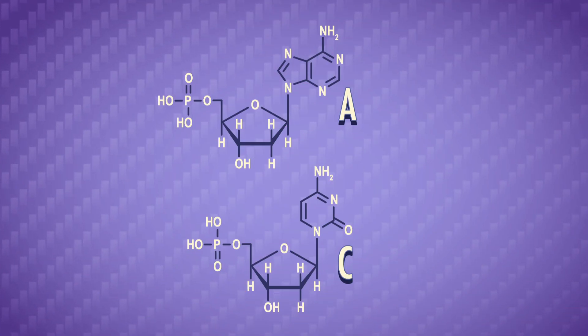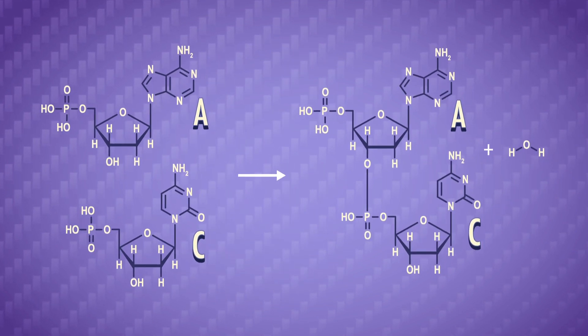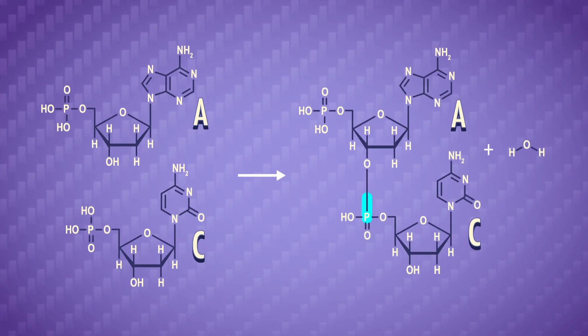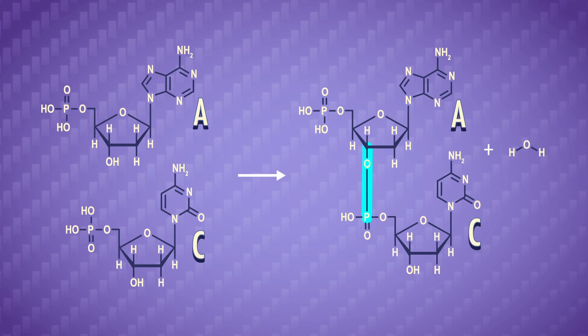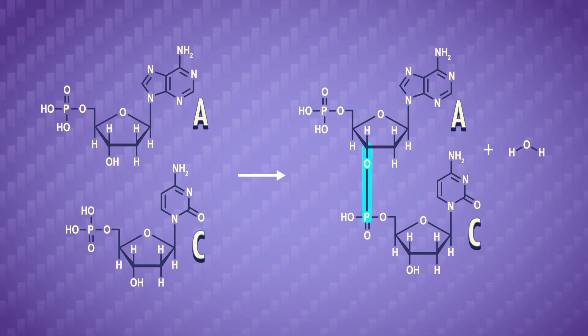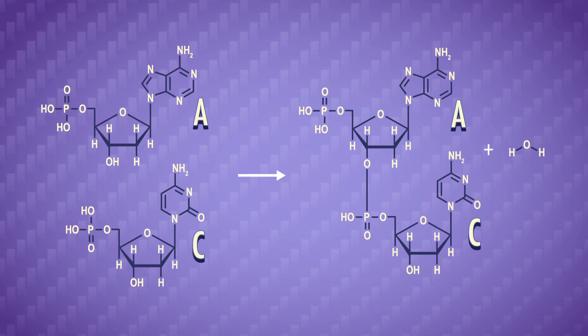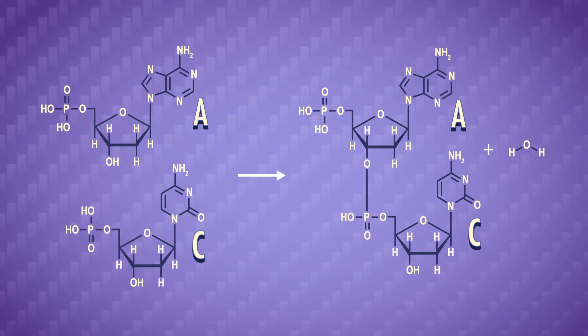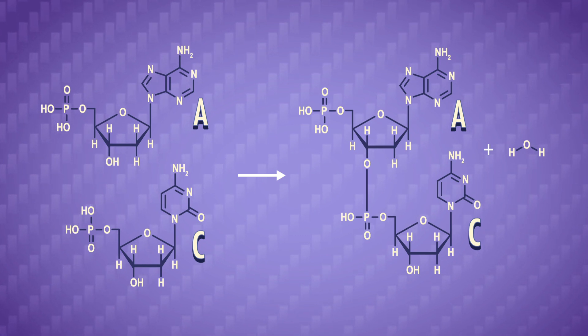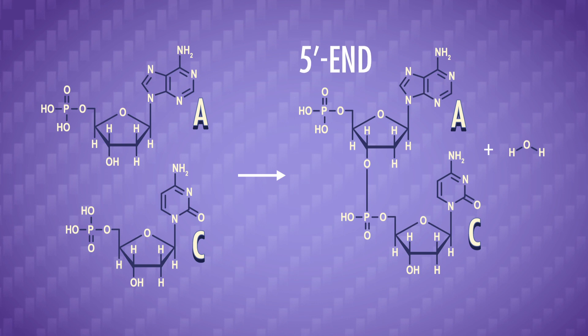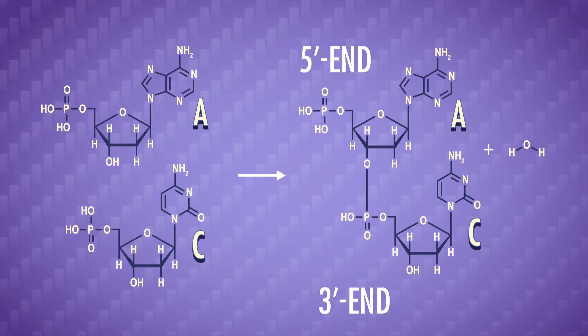Nucleotides also polymerize by an overall dehydration reaction that links the phosphate of 1 to the 3-prime hydroxyl group of another ribose. This makes up the backbone of DNA, which is repeating sugar-phosphate-sugar-phosphate linkages. Basically, the 3-prime and 5-prime carbons of two sugars are linked through a phosphate. So we call this end of DNA the 5-prime end, and this end the 3-prime end.